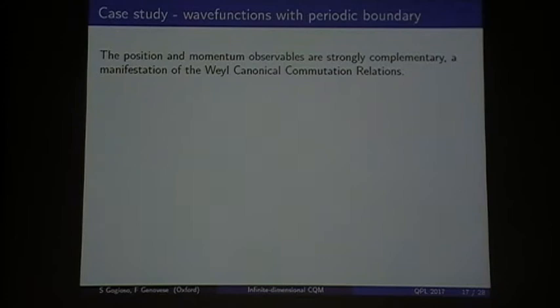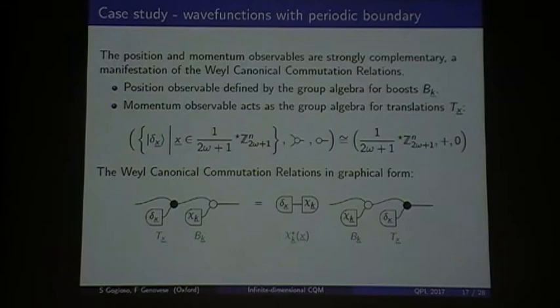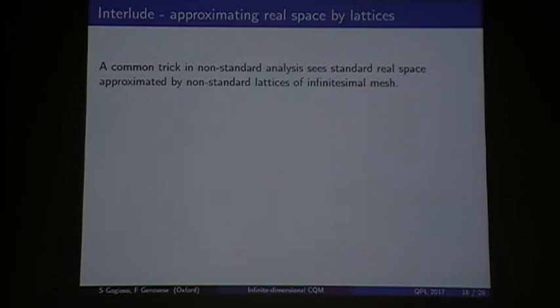Case study, with this stuff, we were able to prove graphically the real canonical commutation relations, using the strong complementarity of our observables. And the full graphical proof is on the paper. But, basically, you can see that we are able to use the standard graphical formalism in infinite dimensions now, to do useful stuff.